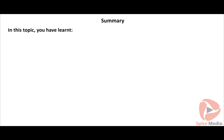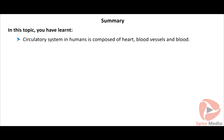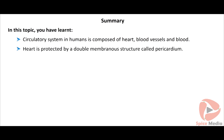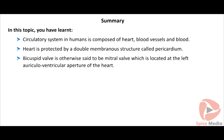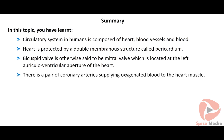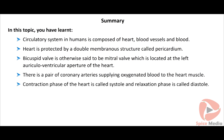In this topic you have learnt: the circulatory system in humans is composed of the heart, blood vessels and blood. The heart is protected by a double membranous structure called the pericardium. The bicuspid valve, otherwise called the mitral valve, is located at the left auriculoventricular aperture of the heart. A pair of coronary arteries supplies oxygenated blood to the heart muscle. The contraction phase of the heart is called systole and the relaxation phase is called diastole. For a normal person, the heart beats 70 to 80 times per minute.